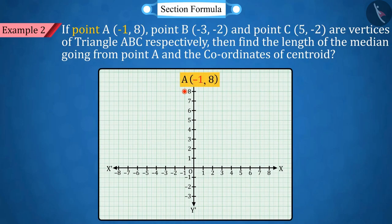If point A(-1,8), point B(-3,-2), and point C(5,-2) are the vertices of triangle ABC respectively, then can you find the length of the median going from point A and the coordinates of the centroid?